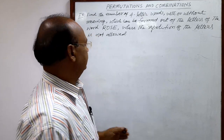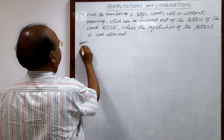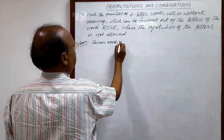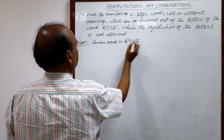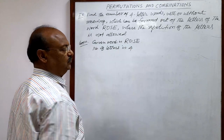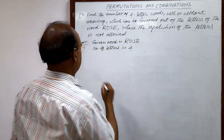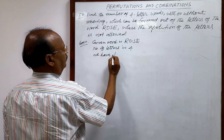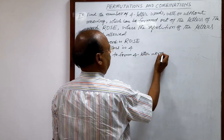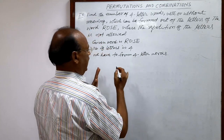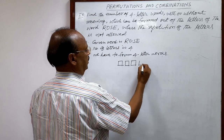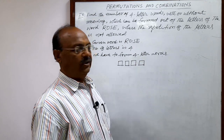Let us find out the answer. The given word is ROSE, and the number of letters is four. We have to form four-letter words, meaning we have to arrange all four letters at different positions so that different words can be formed, with or without meaning.